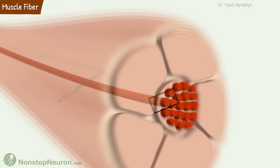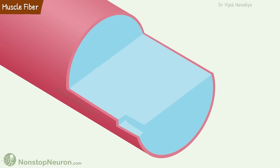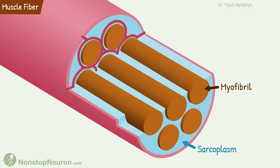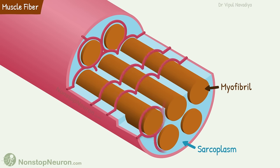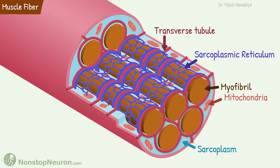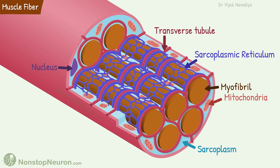Now let's have a closer look inside the muscle fiber. The muscle fiber contains myofibrils, sarcoplasm, transverse tubules, sarcoplasmic reticulum, mitochondria, multiple nuclei, other cellular organelles, and sarcolemma. This three-dimensional cut section gives you a better understanding of the structure. Now we will learn about all these components one by one.